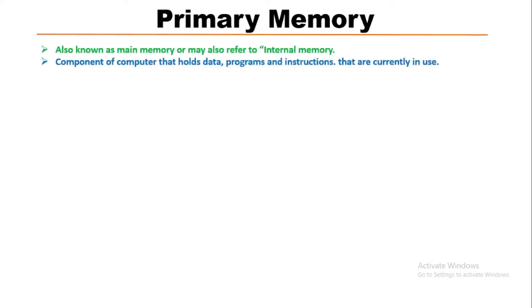In this video, we will learn about primary memory. Primary memory or storage is also known as main memory or internal memory. It is the component of computers that holds data, programs, and instructions that are currently in use. It is the segment of computer memory that can be accessed directly by the computer processor.